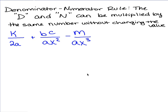k over 2a plus bc over ax squared minus m over ax cubed. Most of you will probably want to write it the long way, so you're writing it down: k over 2a plus bc over ax squared and m over ax cubed. And that's fine. We can do that. And then keep in mind you keep your signs plus and minus.